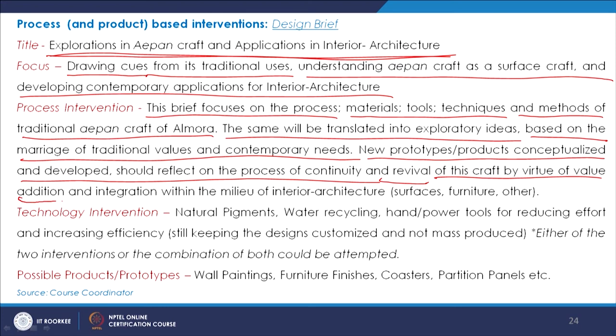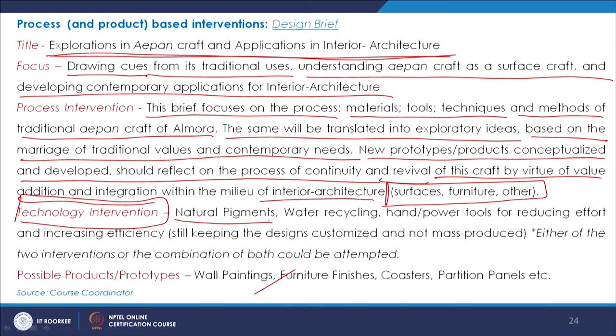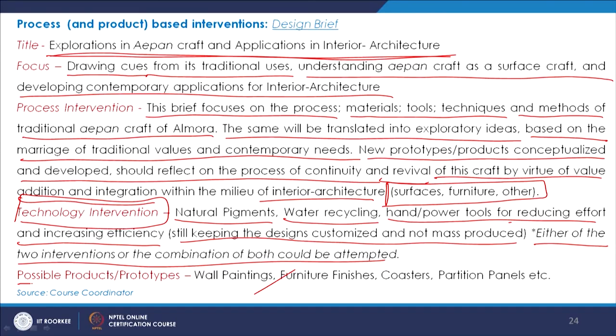Applications on surfaces, furniture, etc. Technology intervention within this craft design process could be to create natural pigments, take care of water recycling, use hand or power tools for reducing effort and increasing efficiency, still keeping the designs customized and not mass-produced — this is very important. Either of the two interventions or combinations could be worked upon. This was one design brief developed, and the possible applications of prototypes could be wall paintings, furniture finishes, coasters, partition panels, etc.